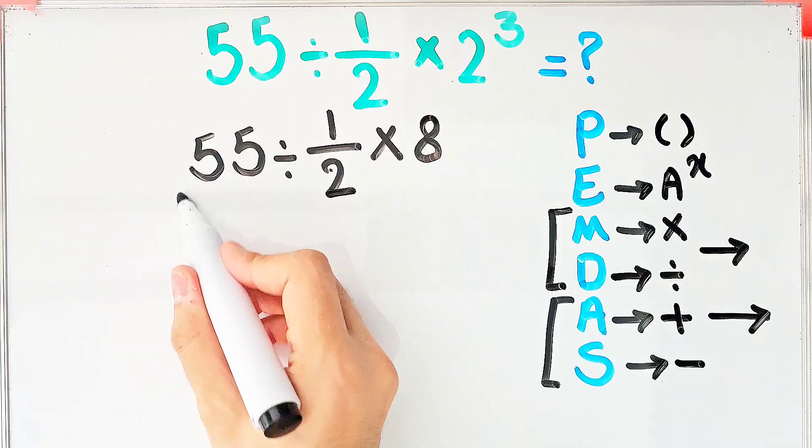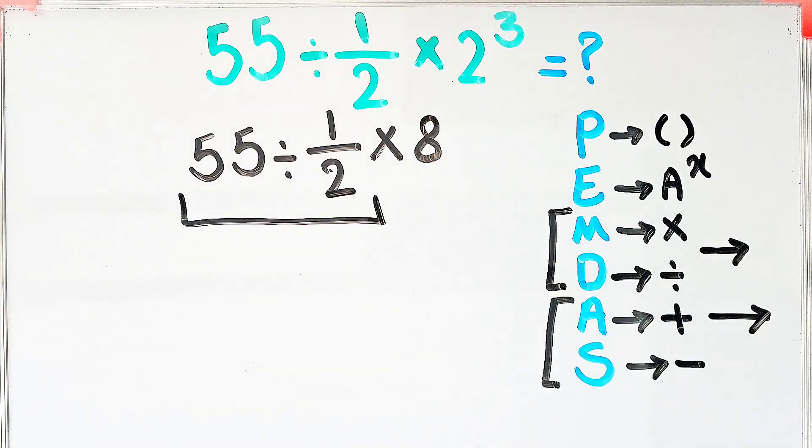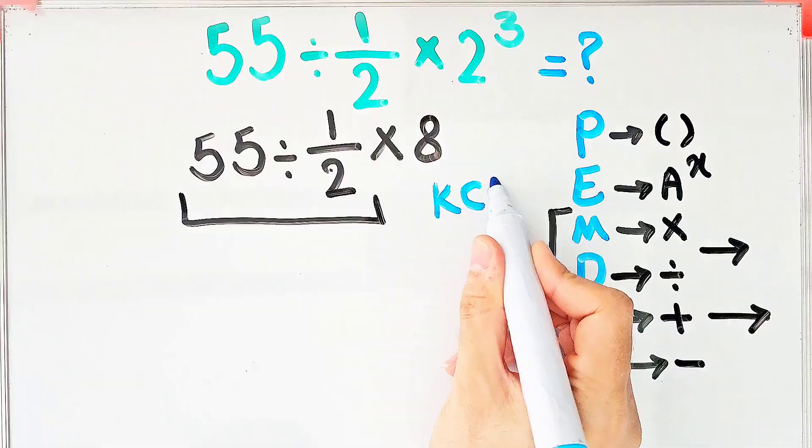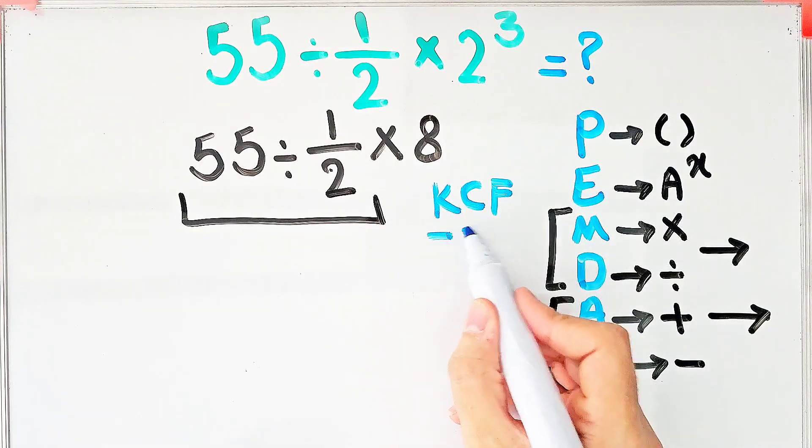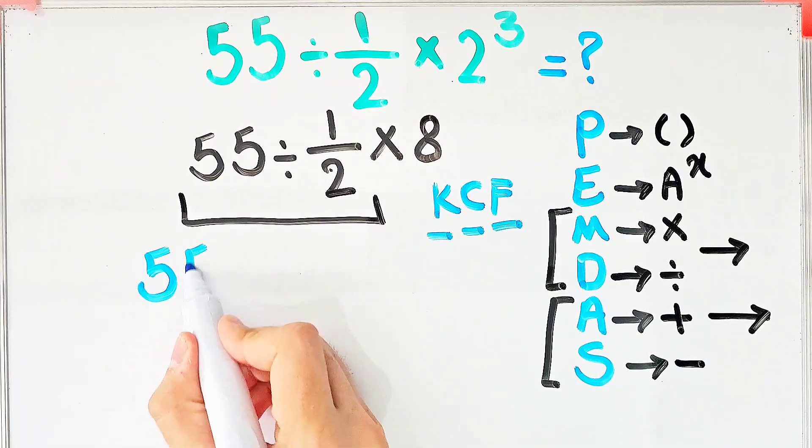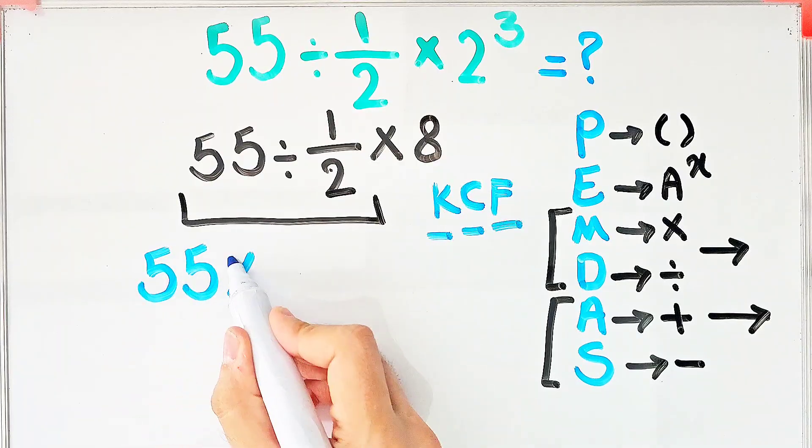To solve this part we need to follow the KCF rule. In this rule, K stands for keep, C stands for change, and F stands for flip. We keep the first number as it is, then we change the sign, then we flip the fraction.